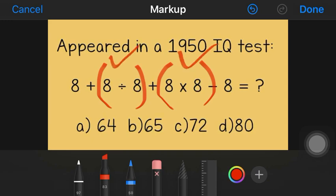8 divided by 8 is 1 and 8 into 8 is 64. So I simplify this equation by using 8 plus 1 plus 64 minus 8 is equal to question mark.